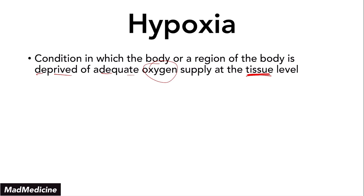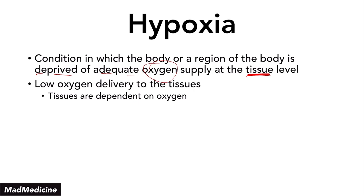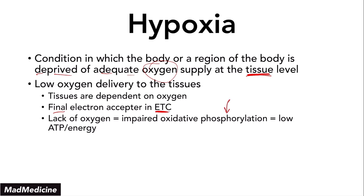Low oxygen is usually the cause of hypoxia, and when you have low oxygen delivered to tissues you're going to see a lot of damage, mainly because our tissues are very dependent on oxygen. Going back to biochemistry — specifically the electron transport chain — oxygen is the final electron acceptor. Because it's the final electron acceptor, it's the main reason we're able to generate ATP. A lack of oxygen leads to impaired oxidative phosphorylation, meaning low ATP, low energy, which causes cellular injury and can lead to cellular death.